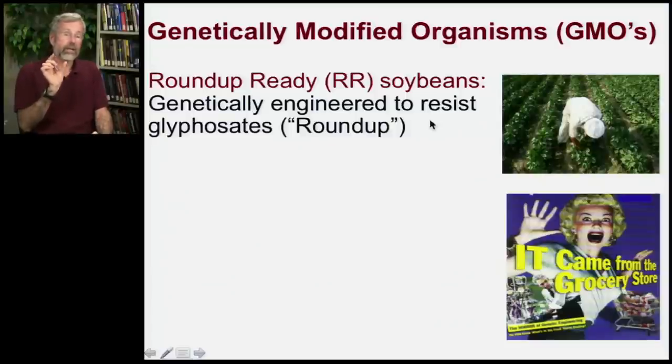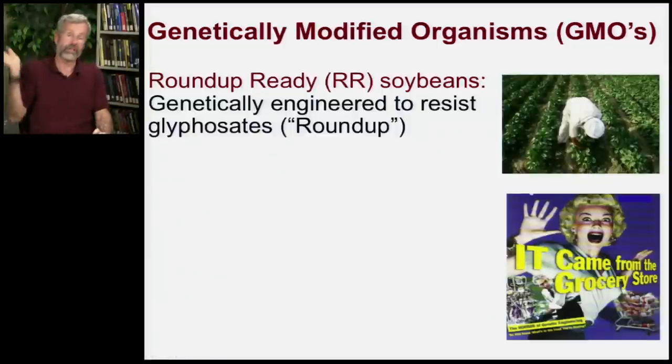If you make your soybeans resistant to a poison, you can then poison the fields, and all the weeds will be taken out by your pesticide — and that's Roundup. Roundup Ready means that the plants have a gene that resists the effect of glyphosates, which is the active herbicidal poison in Roundup, so the soybeans are fine.